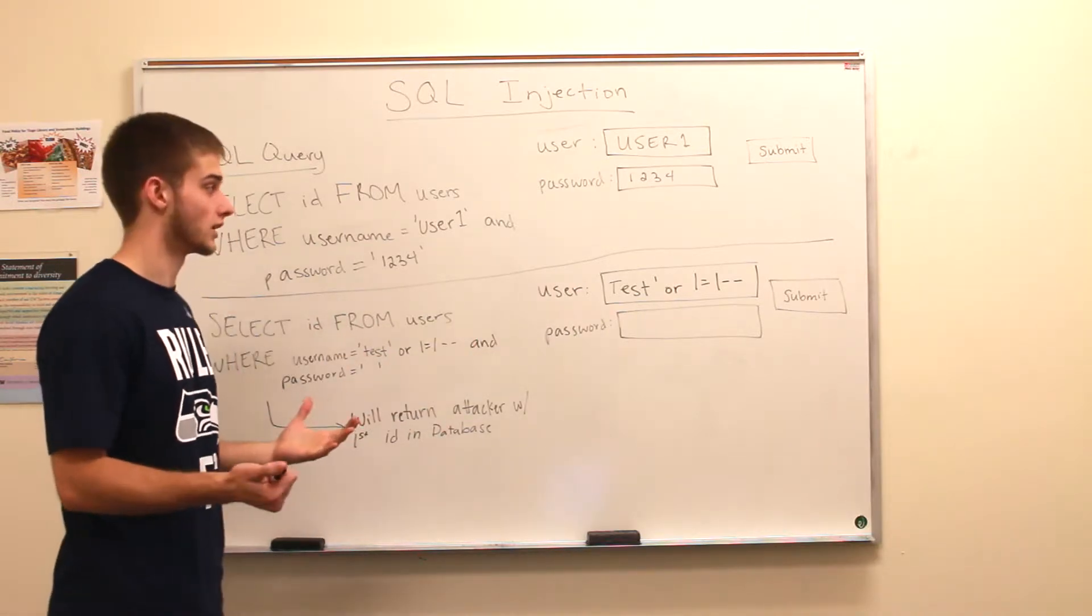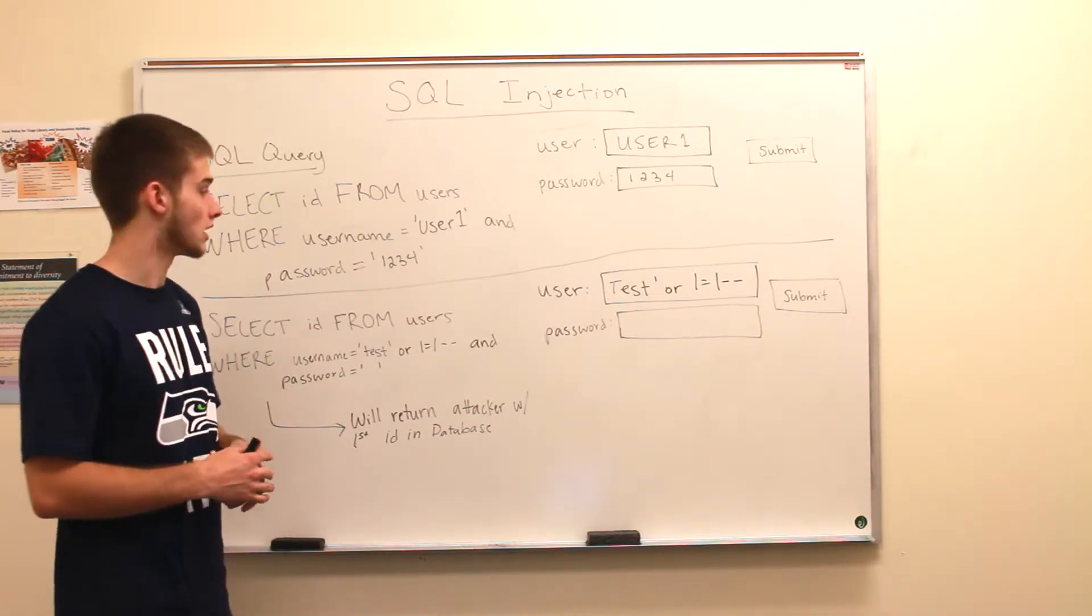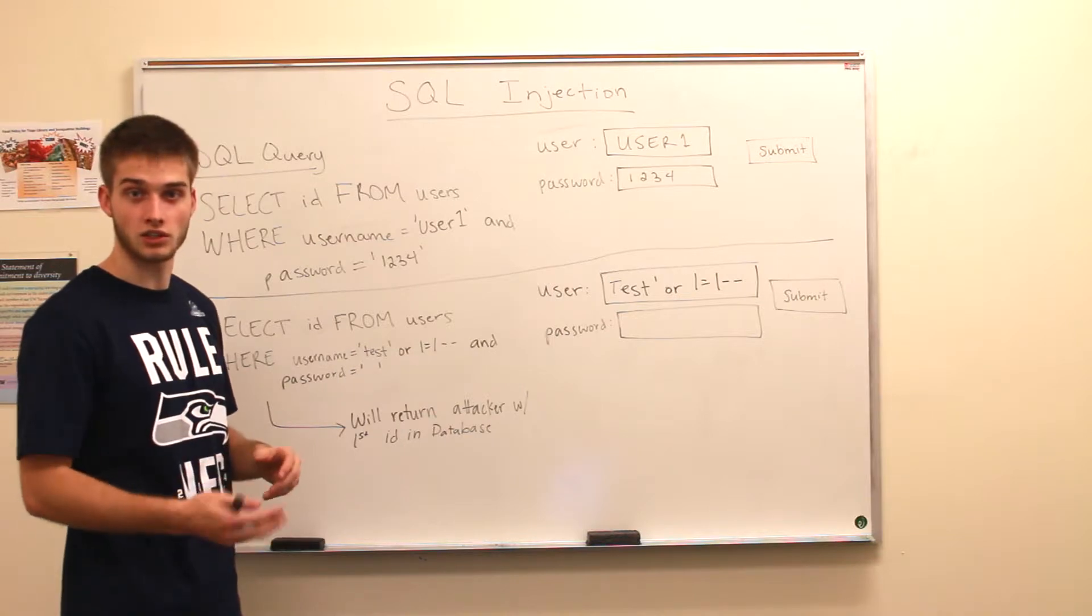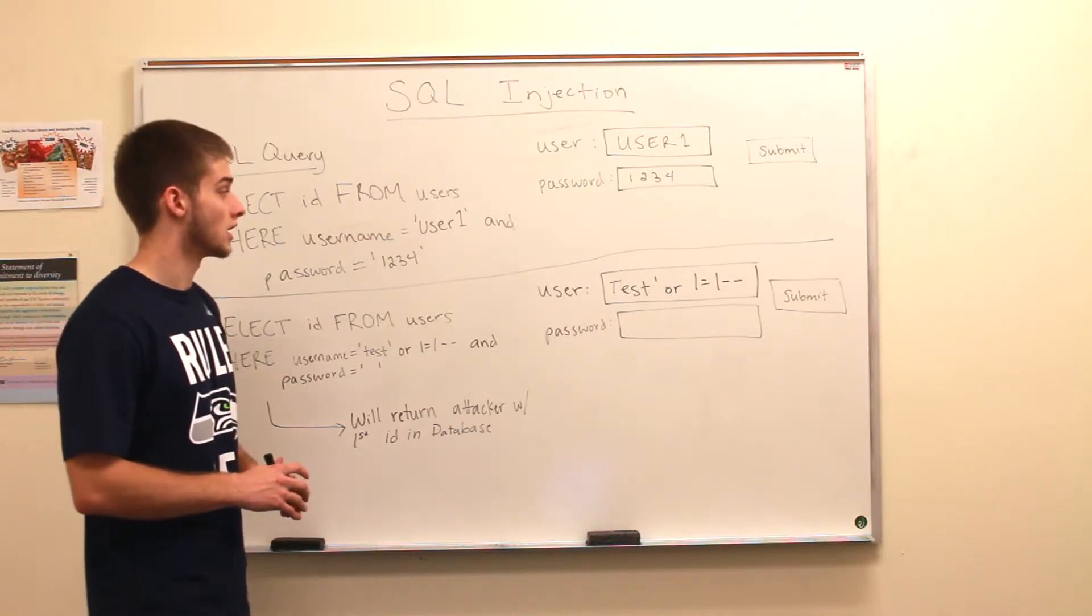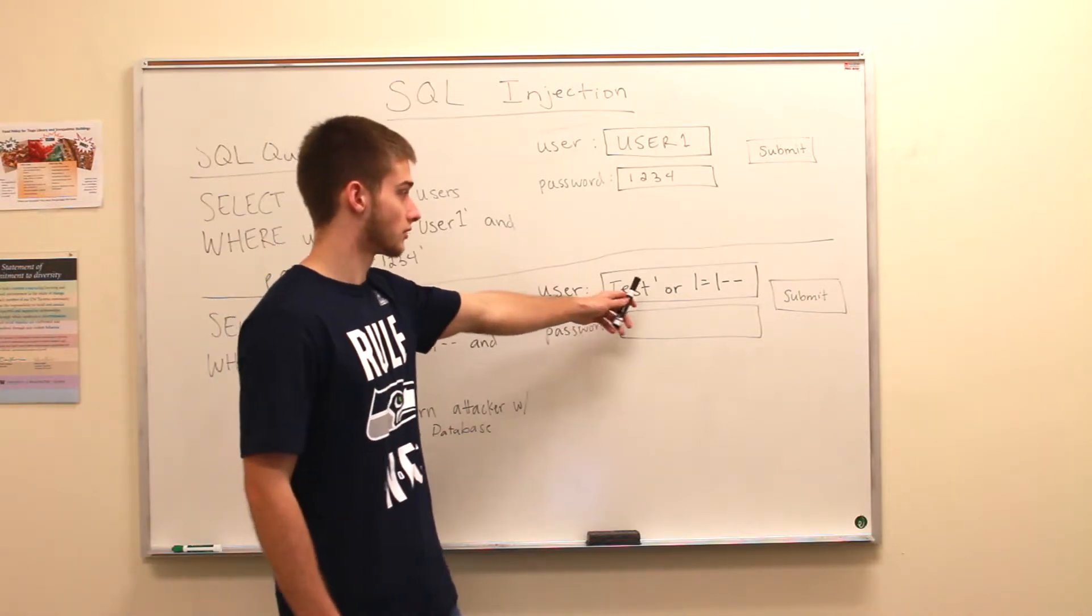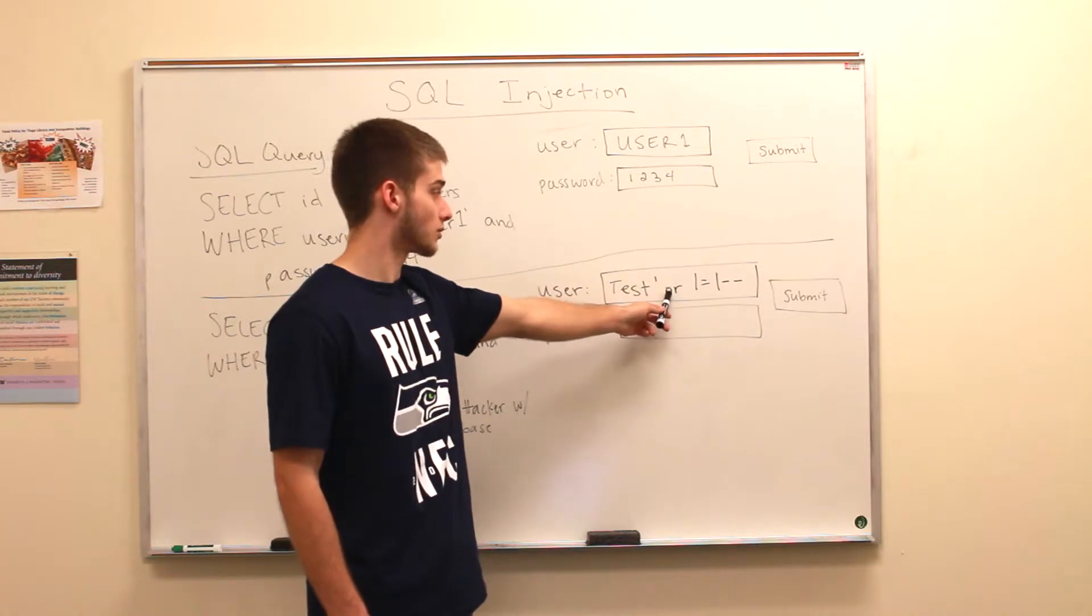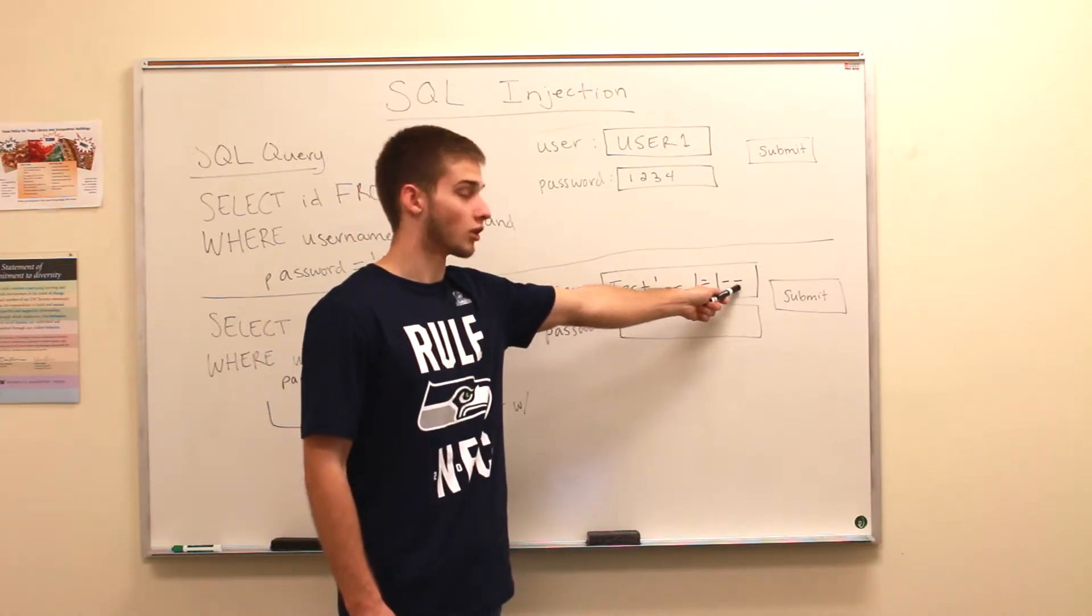When SQL injection is possible because the site isn't using any sanitation or protections against SQL injection, a malicious user can type in whatever they want, followed by the closing quote and type in or 1 equals 1, followed by two dashes.